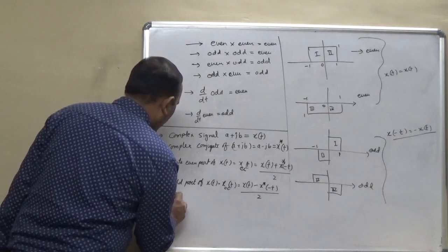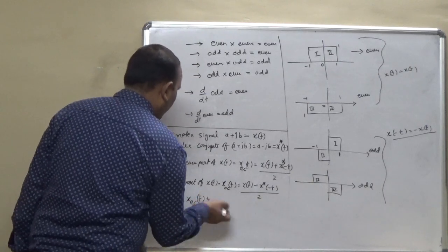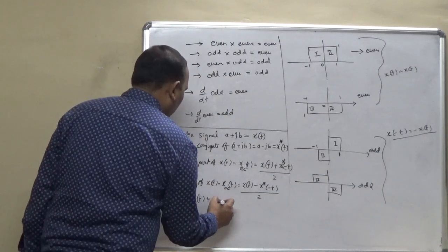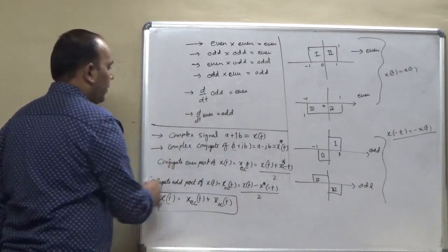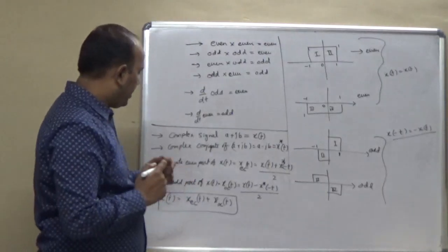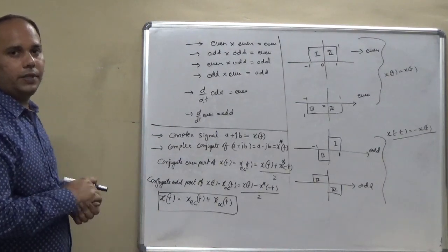And any signal that is a complex signal will be defined in terms of even conjugate of that signal and odd conjugate of that signal. So, these are the right relation which relates the even and odd conjugate part of the complex signal. Thank you.